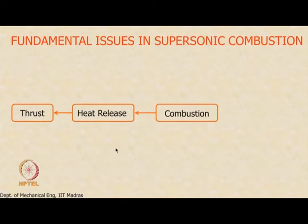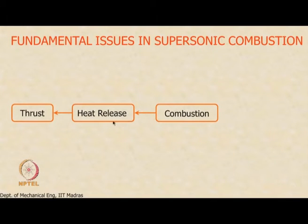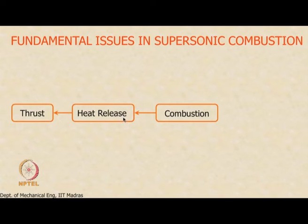Heat release in turn depends upon the combustion process — if combustion is efficient, there will be a lot of heat release; otherwise it will be less. Now in very high-speed compressible flow such as that in a supersonic combustor, heat release is also limited by the Mach number at which the flow enters — that comes from the Rayleigh curve. If the combustor inlet Mach number has a certain value, there is only so much heat you can add before it will thermally choke and alter the flow conditions.